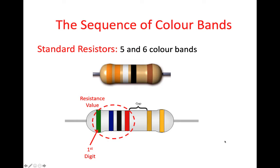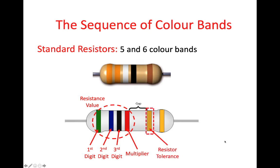So on the resistance value bands: the first digit is represented by the first band, the second digit by the second colour band, and we have a third digit represented by the third colour band. Then we have the multiplier colour representing the number for the multiplier. And just to repeat — we have resistance tolerance next, and if there is a sixth band, that represents a temperature coefficient.